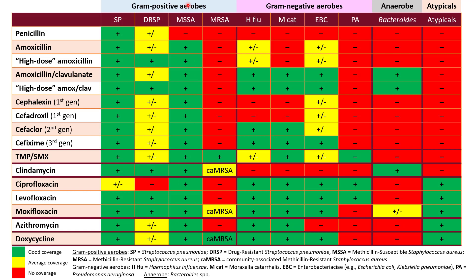For rhinosinusitis, we should also keep in mind that Haemophilus influenzae and Moraxella catarrhalis can also be causative. If we suspect these, amoxicillin-clavulanate will be the best option, because these two organisms are likely to produce beta-lactamases, which will break down penicillin and amoxicillin. Clavulanate will inhibit beta-lactamase, so amoxicillin-clavulanate will retain activity against these organisms.